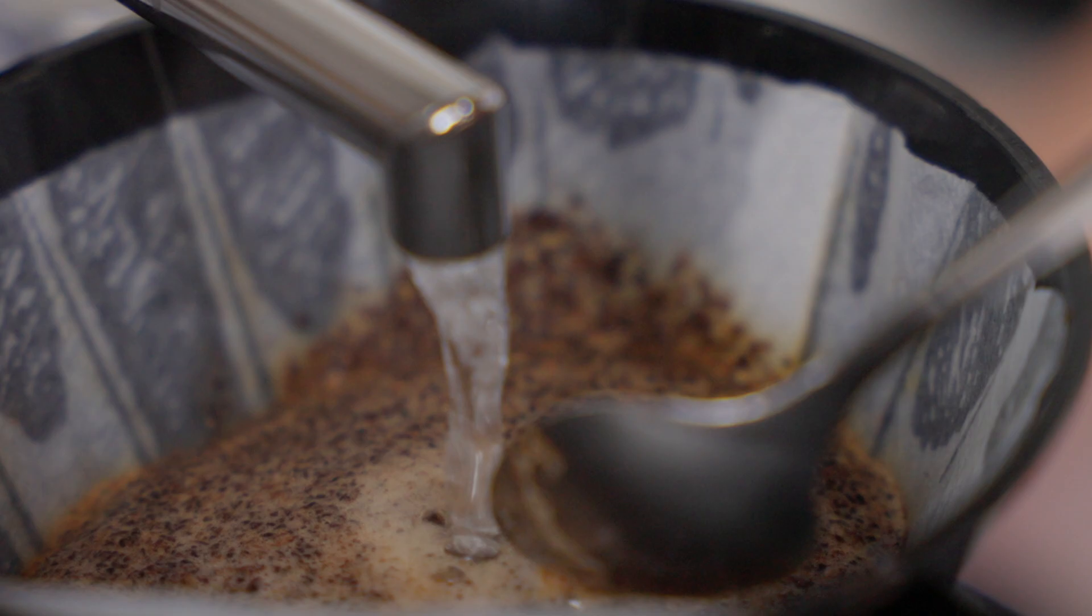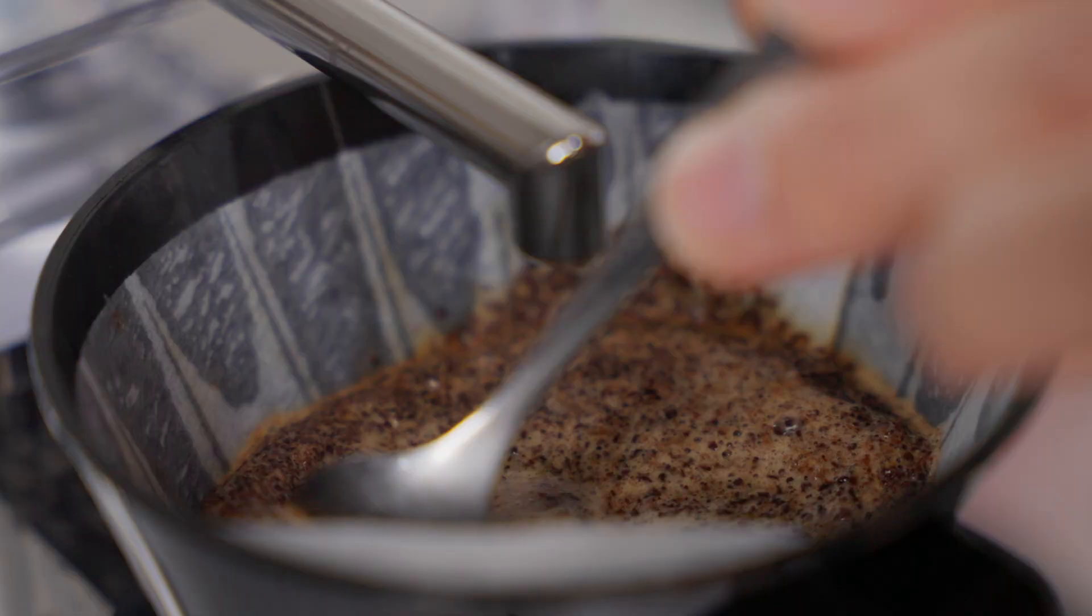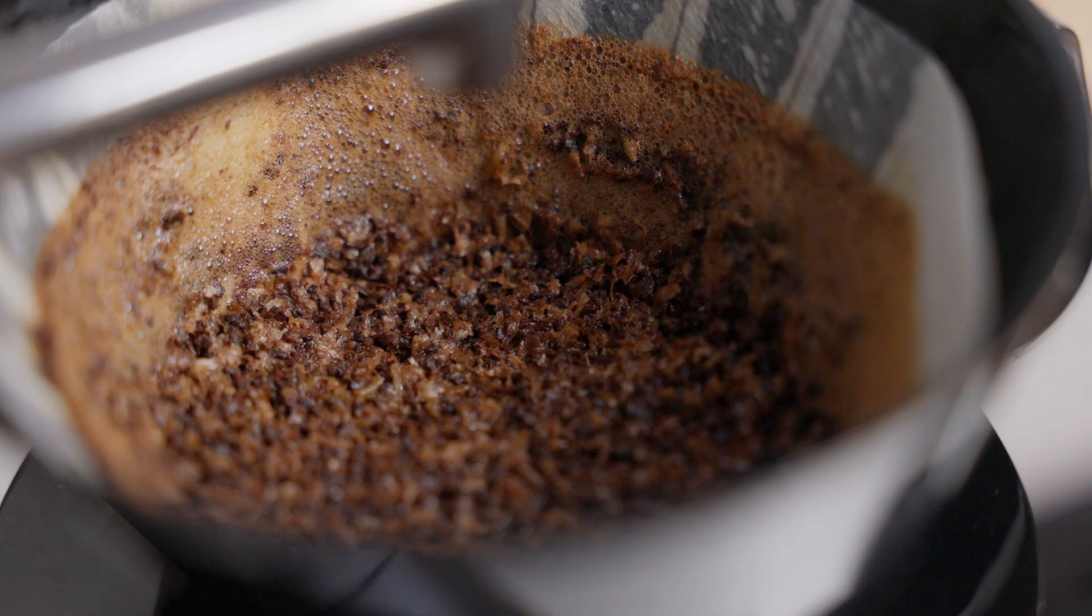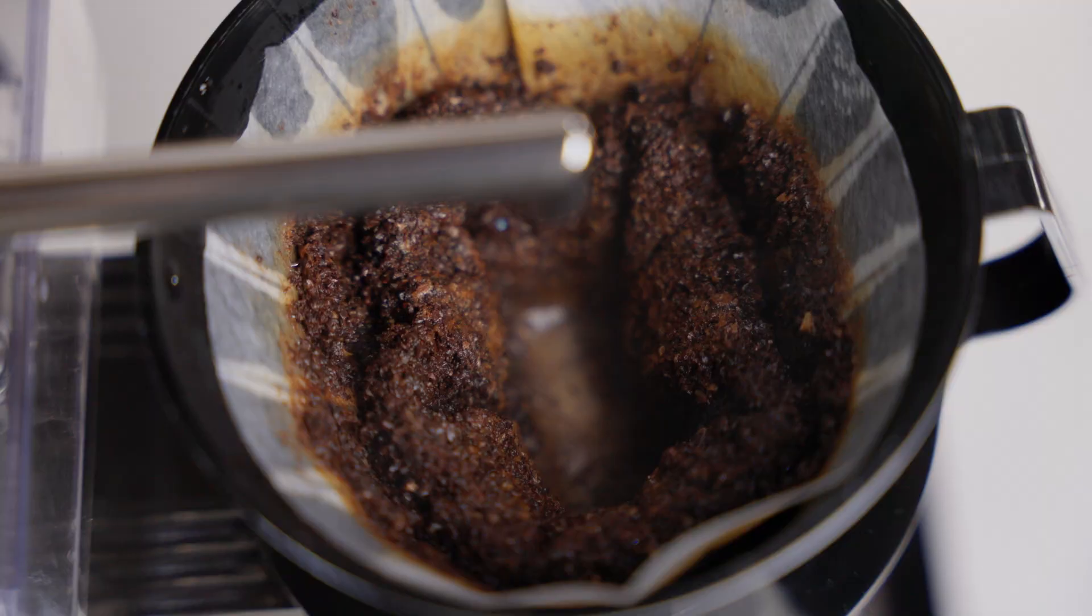In order to get a higher extraction, we need to constantly agitate the coffee bed. Your bed of coffee afterwards will look nice and flat with very little grinds on the side. If you do not stir your coffee, the distribution from the spout of the brewer will make a crater in the bed, achieving unbalanced brew.